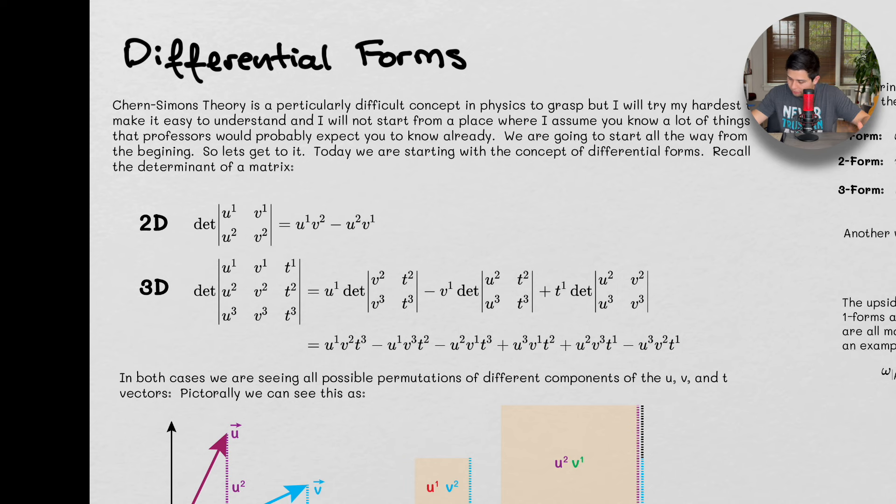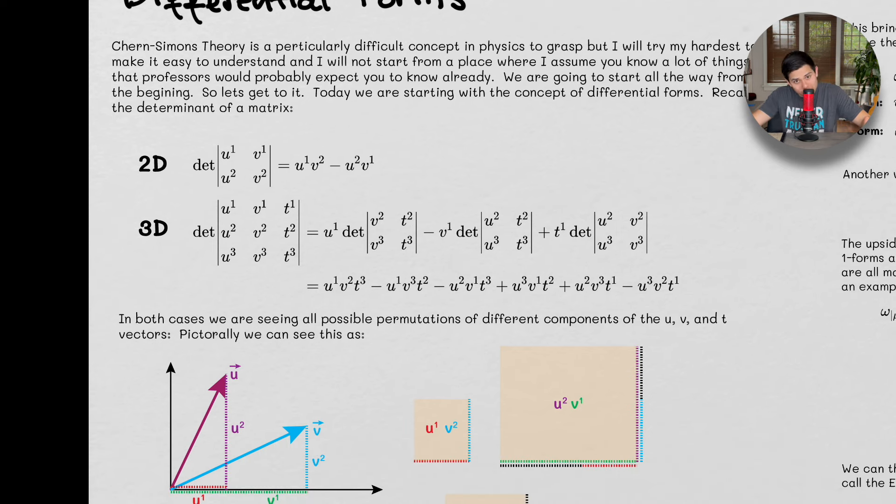Okay, so recall the determinant of something. The determinant of a matrix just looks like this, where we have u1, u2, v1, and v2. And it looks like this, right? So u1 times v2 minus v1 times u2.